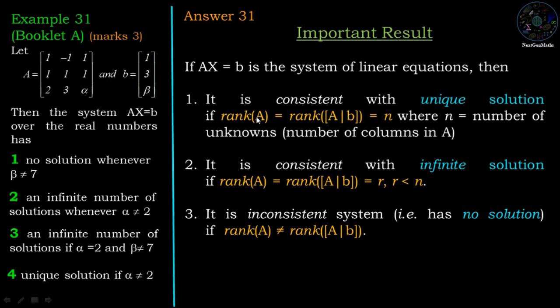To find the rank of A or rank of augmented matrix [A|B], we convert A or [A|B] into its row echelon form. The number of non-zero rows in the row echelon form gives the rank of the matrix.